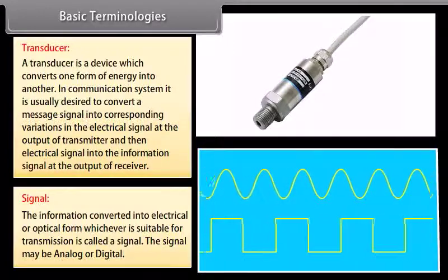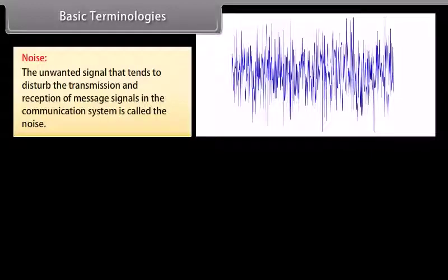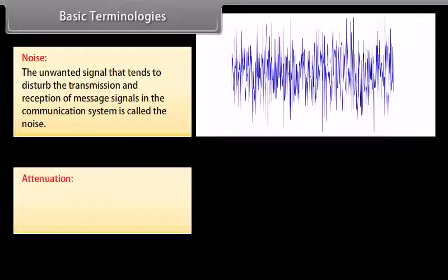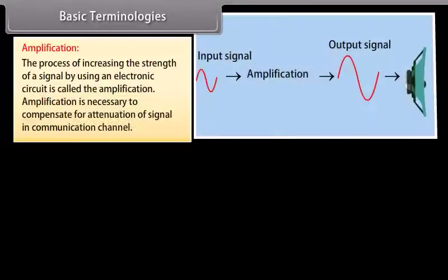The information converted into electrical or optical form, whichever is suitable for transmission, is called a signal. The signal may be analog or digital. Noise is the unwanted signal that tends to disturb the transmission and reception of message signals in the communication system. Attenuation is the loss of strength of a signal while propagating through a medium.